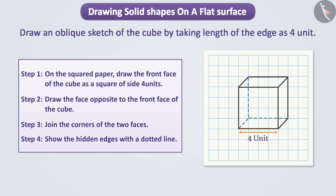Thus, we have drawn an oblique sketch of a cube of dimensions 4 by 4 by 4 units. Now let us draw the isometric sketch of this.